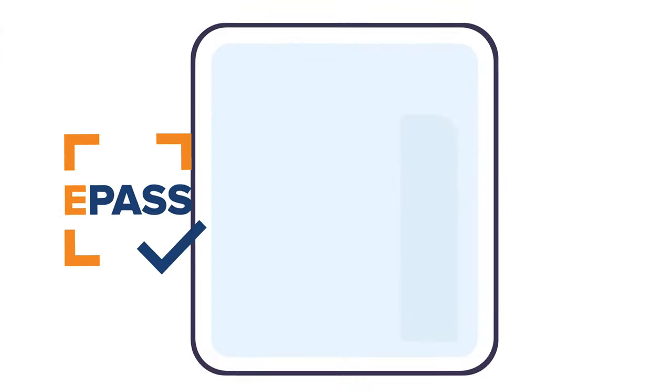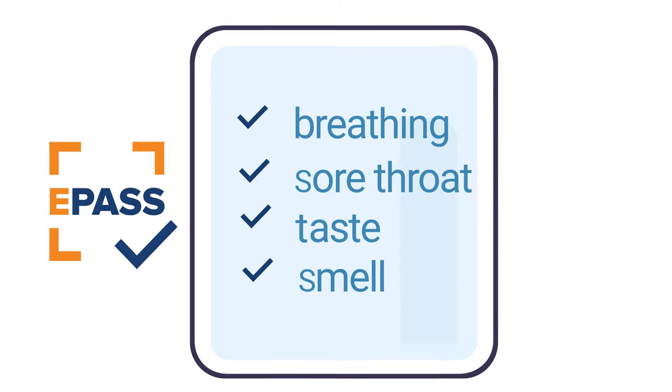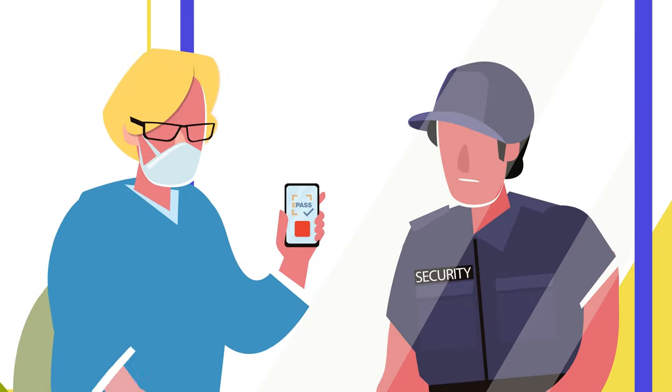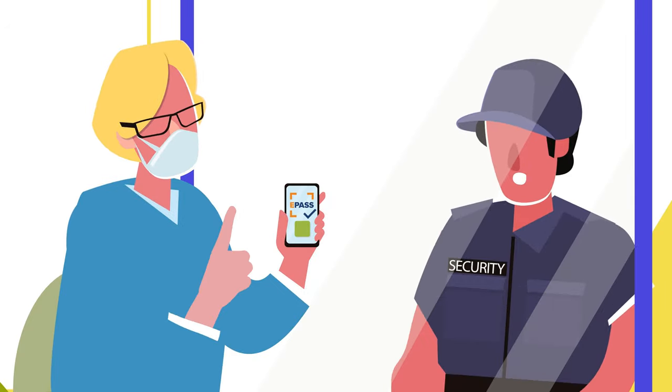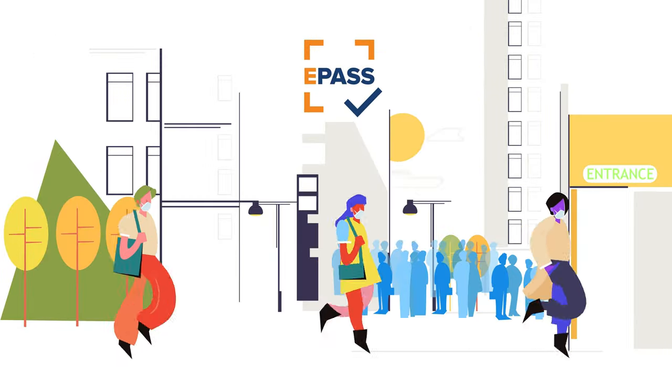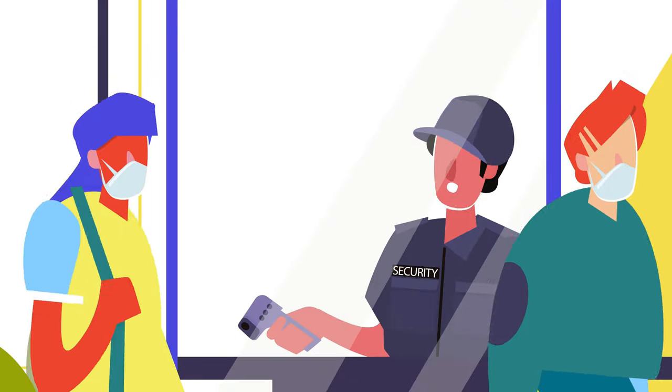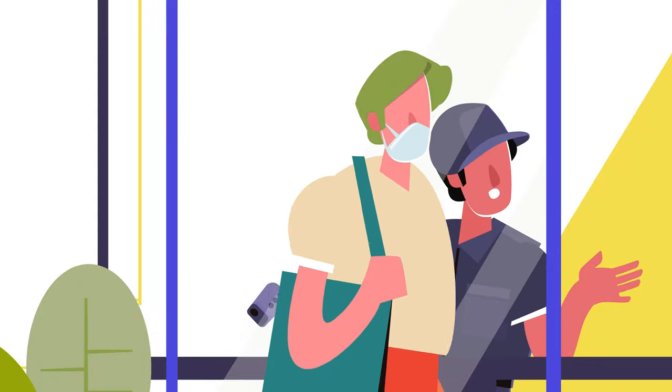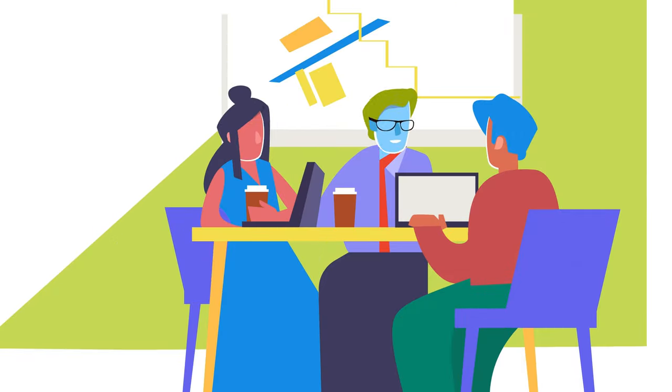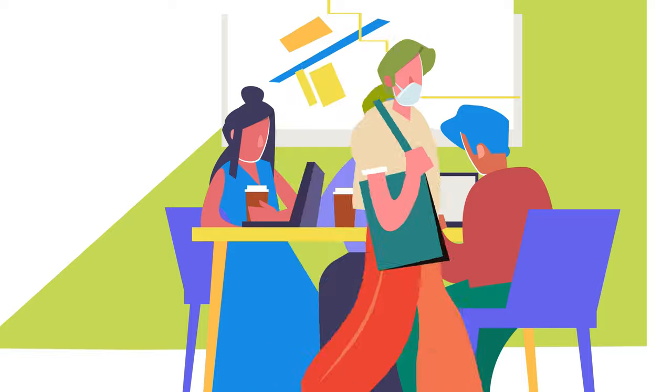ePass is a secure solution that automates the many processes you need to adhere to in 2021 to provide safe access and tracking of your employees and visitors. ePass monitors and reports on contacts between individuals, giving you the ability to notify all affected staff if a person falls ill.